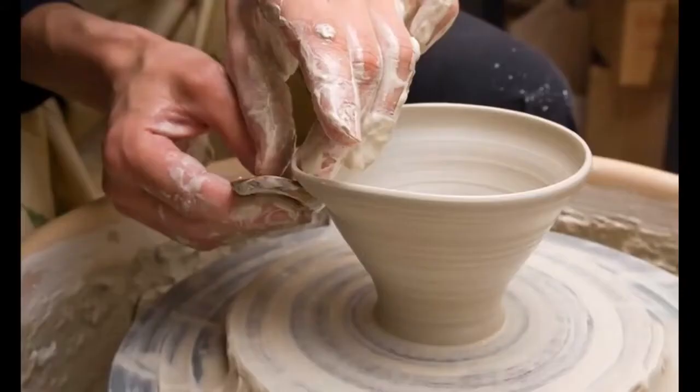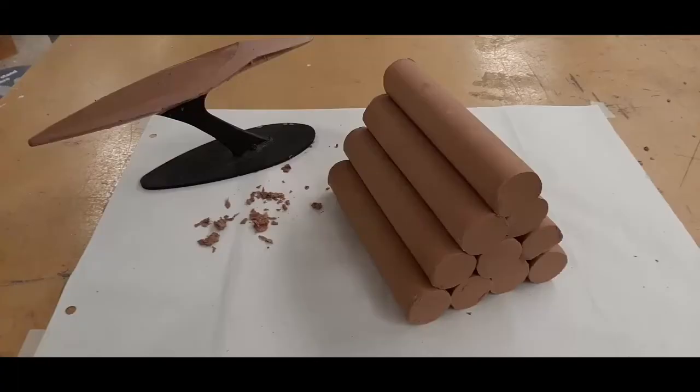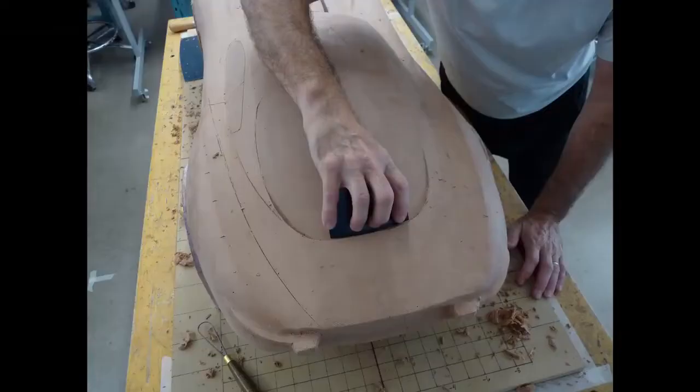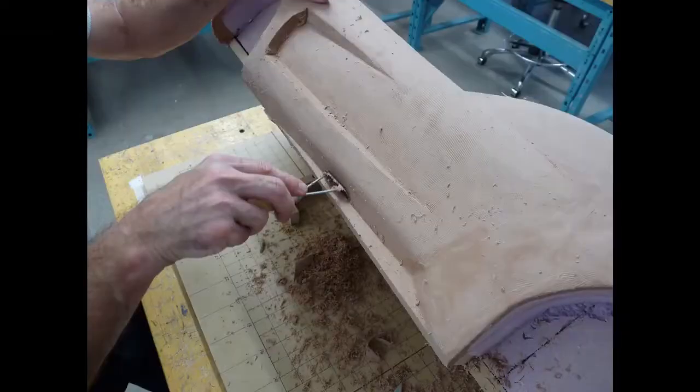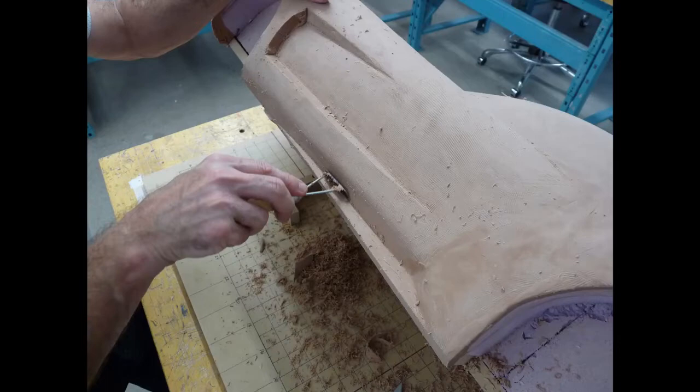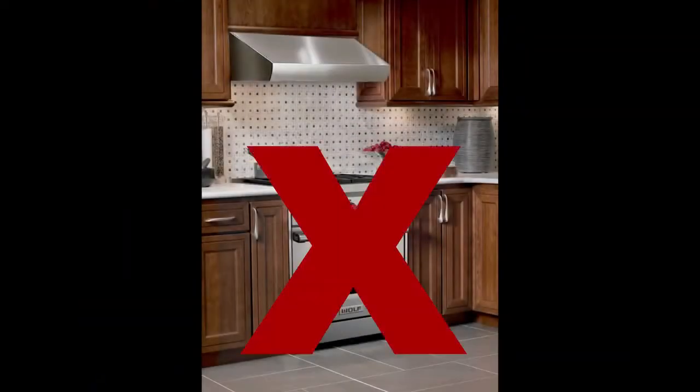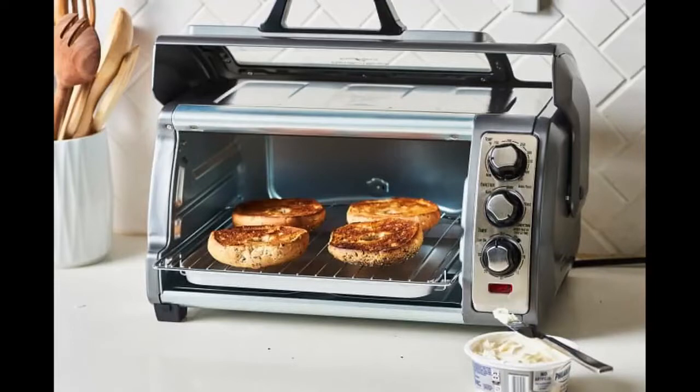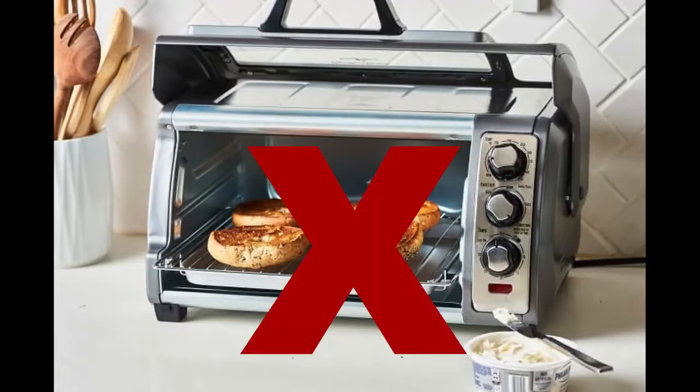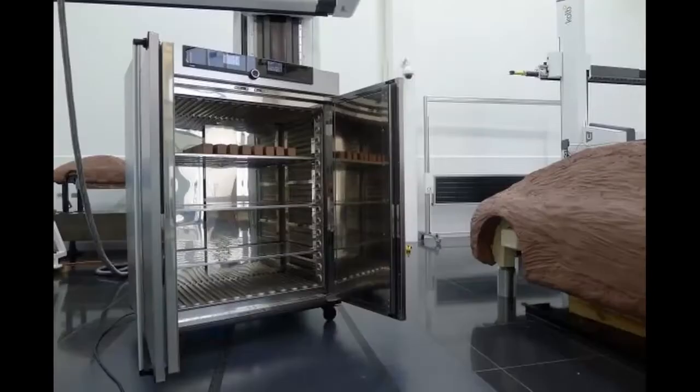Automotive clay is different than traditional clay in that it's activated with heat instead of water. It's applied warm to the model and when it's cooled it can be sculpted with razor sharp lines. You can't heat the clay with a traditional kitchen or toaster oven because they run too hot. You need a specialty oven that runs at a much lower temperature.